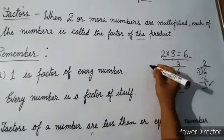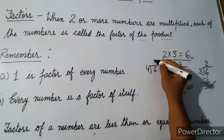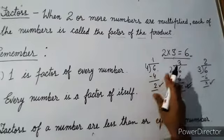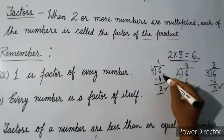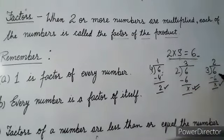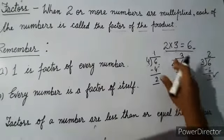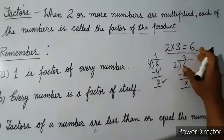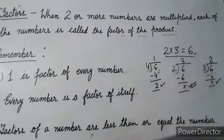Suppose we divide six by four — four once is four, remainder two — so four does not completely divide six. Why? Because four is not in the table of six. So four is not a factor of six. But two is a factor of six because two times three is six, and three is a factor because three times two is six.